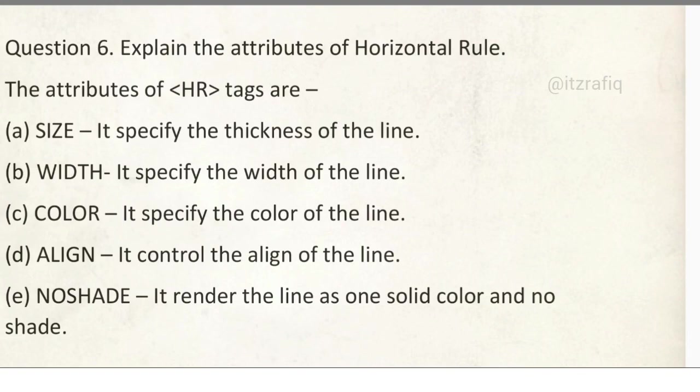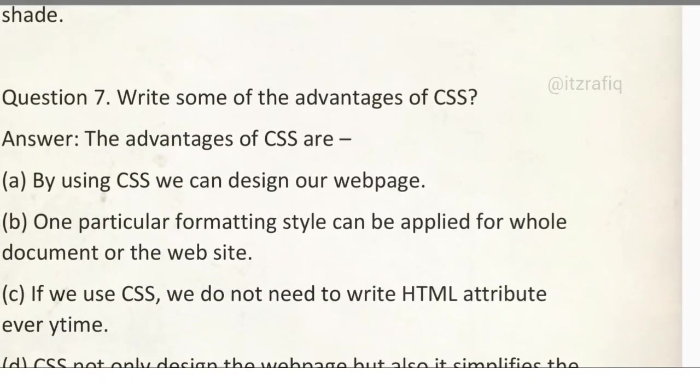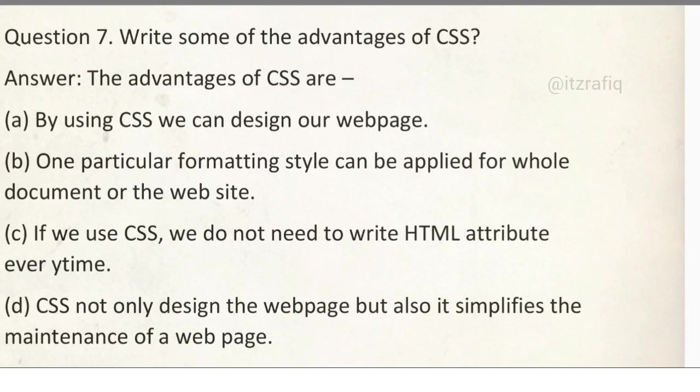Number 6: Explain the attributes of horizontal rule. The attributes of horizontal rule are size, width, color, align, and no shade. Number 7: Write some advantages of CSS. These are the advantages. By CSS we can design the web page. And for CSS, just we write the style rules once and we can reuse it anytime whenever we require. And if we use CSS we don't have to write the HTML attribute every time. So what happens? The length of the HTML code becomes smaller.